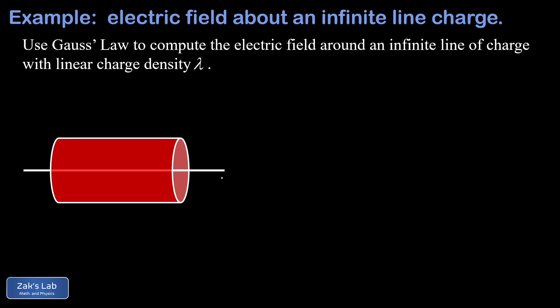We set up a cylinder so that its symmetry axis lies directly along this line charge distribution, and that means every single point on the curved surface of the cylinder lies at exactly the same distance from our infinite line of charge.